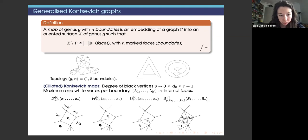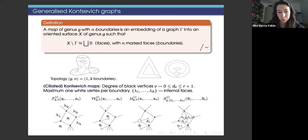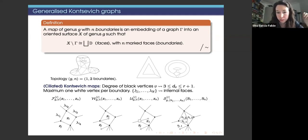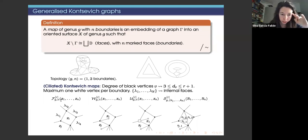The first set F_{g,n} has a fixed topology and parameter r. The N marked faces carry special variables z_1, ..., z_n, and internal faces carry weights lambda. The second set introduces cilia — edges carrying one univalent white vertex — giving the ciliated Kontsevich maps. There is a restriction that at most one white vertex per boundary. The third set is similar but allows the vertex from which the cilium emerges to be a square vertex, giving it unrestricted degree.